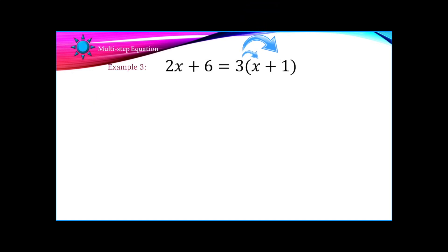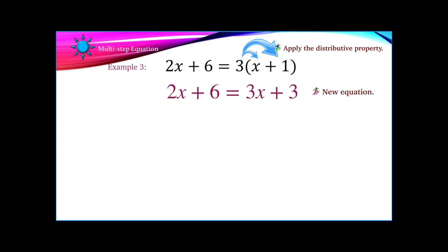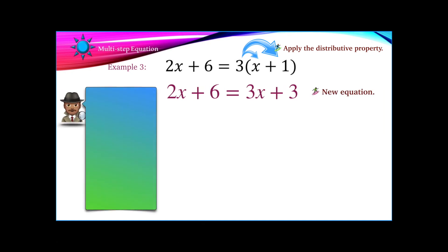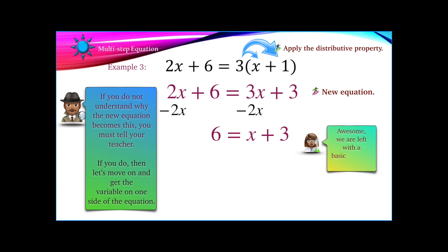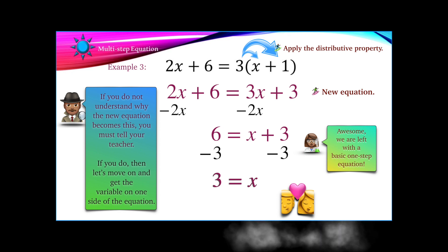Let's look at example 3. Here we have the distributive property on the right side of the equation, and the new equation will look like this. It will be time to move the variable from one of the sides — I see the 2x on the left side and a 3x on the right side. I like to get rid of the smaller one, as that leaves me with a positive coefficient. All of a sudden we are left with just a simple one-step equation, and we discover that x equals 3.